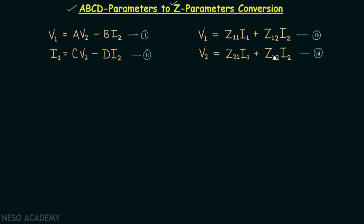Here we are trying to express all four Z parameters in terms of the four ABCD parameters. We will try to derive the forms of equations 3 and 4 using equations 1 and 2. When you compare equation 2 with equation 4, you will find they share the same set of variables: V2, I1, and I2.